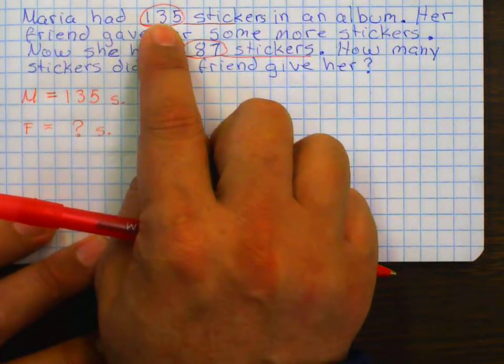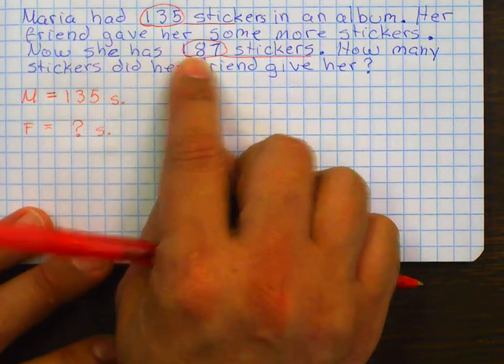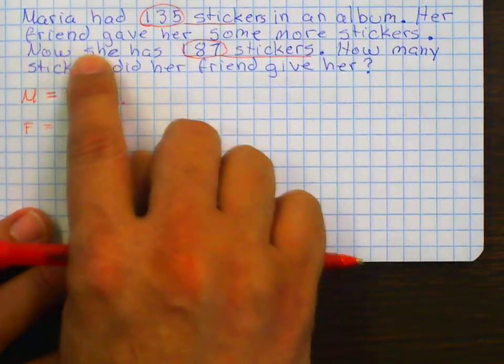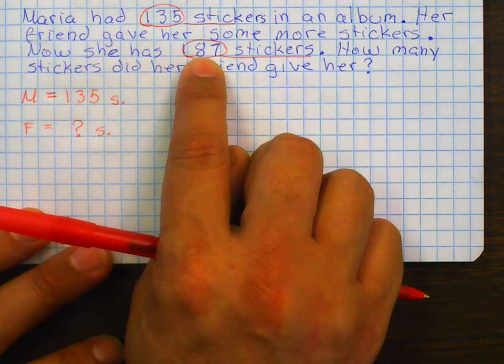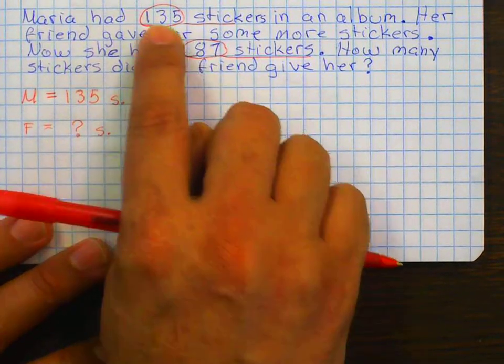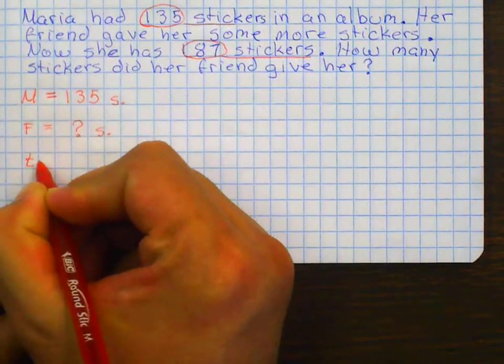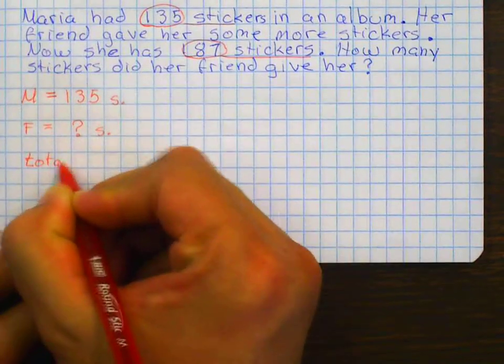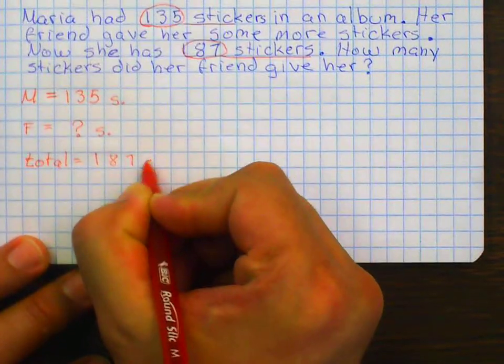Again, I'm going to say that one more time. I know this has to be my total. First of all, because it says that now she has 187. Also, that's because what she has now is more than what she had before. Okay, so now I know that her total now is 187 stickers.